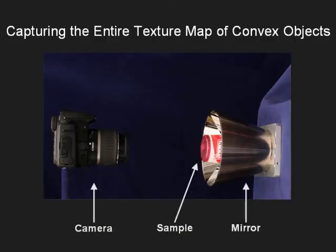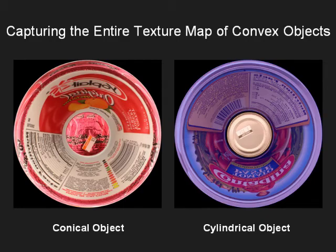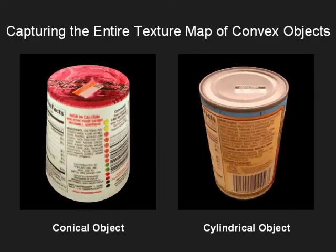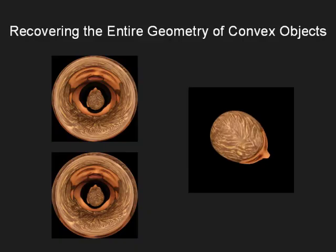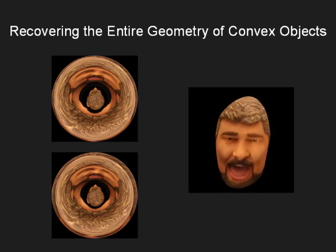This system uses a flipped cone to capture the entire texture map of a convex object — its top and all sides. A conical and a cylindrical object imaged by this system are shown here. Observe that the top of the object is seen directly by the camera while its sides are seen via reflections by the mirror. We can now use these images as texture maps. By capturing two such images with parallax, we can recover the entire geometry of the convex object. The object was moved along the optical axis between the two images, and observe that the epipolar lines are radial. To our knowledge, this is the first system that can recover the entire geometry of a convex object — its top and all sides — by capturing only two images.